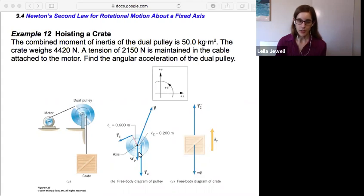it has a larger radius, which down here is labeled as 0.6 meters. And the crate is connected to a smaller part of the pulley, where it is 0.2 meters. This can give mechanical advantage by having two different radii here. You adjust the relative torques.